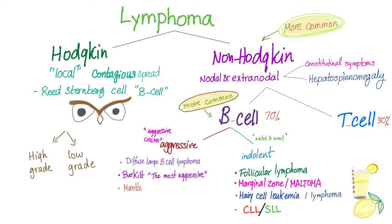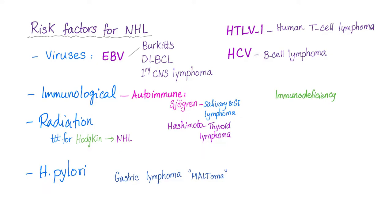Hodgkin's lymphoma has the Reed-Sternberg cell. If you don't find the Reed-Sternberg cell, it's non-Hodgkin's. We have risk factors for non-Hodgkin's lymphoma — let's elaborate. We have viruses such as Epstein-Barr virus, which can lead to Burkitt's lymphoma, diffuse large B-cell lymphoma, or primary CNS lymphoma. Human T-cell lymphotropic virus 1 causes human T-cell leukemia or lymphoma. Hepatitis C virus can lead to B-cell lymphoma.